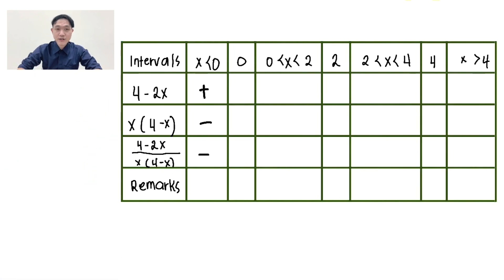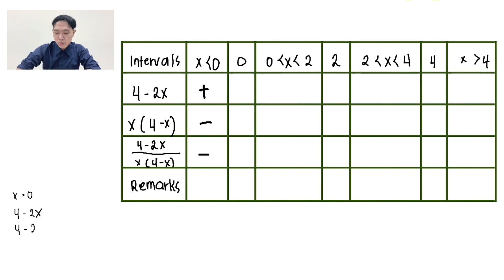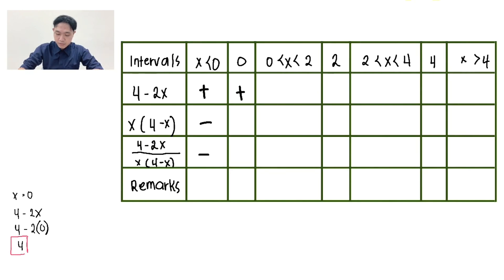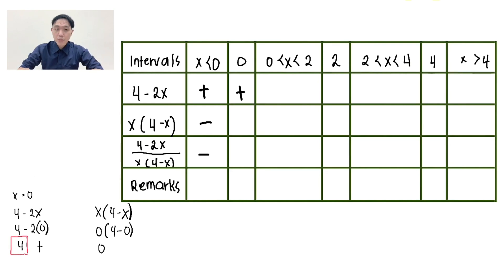For x equals 0, there is no interval, so we automatically use 0. Evaluate 4 minus 2x: 4 minus 2 times 0. The answer is positive 4, so the sign is positive. For the denominator, 0 times the quantity of 4 minus 0, the answer is 0. Positive divided by 0 is undefined.